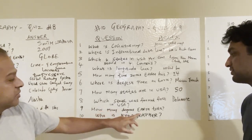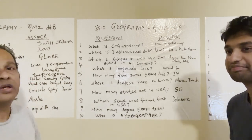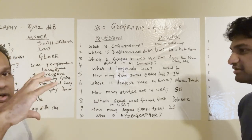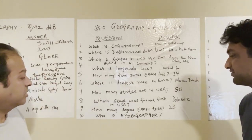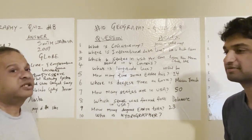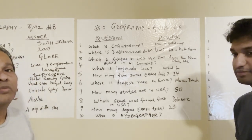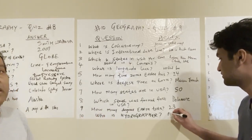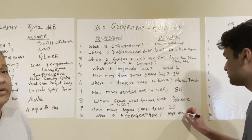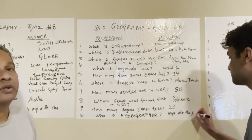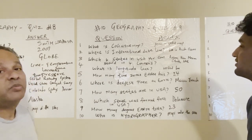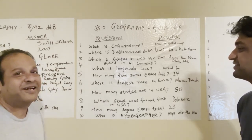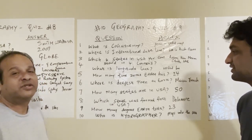How many degrees does the Earth tilt? 23 degrees — the Earth is tilted 23 degrees. Who is a hydrographer? A hydrographer is the person who maps under the water, like the ocean — similar to an oceanographer, he maps under the sea. That's pretty tough. That completes quiz nine. He answered almost all the questions — nine questions. I answered one. We'll see you guys in the next one.